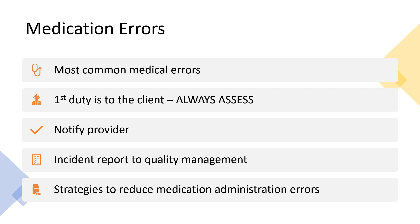The nurse will write an incident report that includes the medication error, what happened to the patient, what actions the nurse took, and what other people were involved. Any circumstances that may have played a role in the medication error should be included. The nurse must state only the facts in the incident report, and even though the incident report is a legal document, it is never placed or mentioned in the client's medical record.